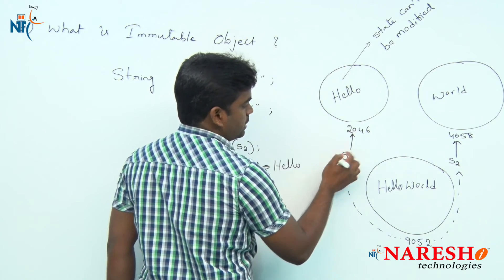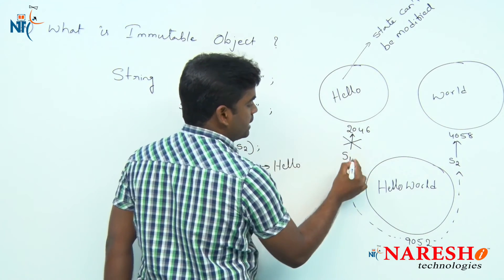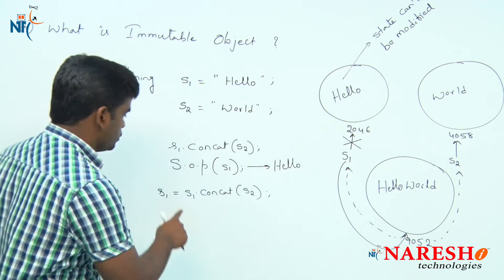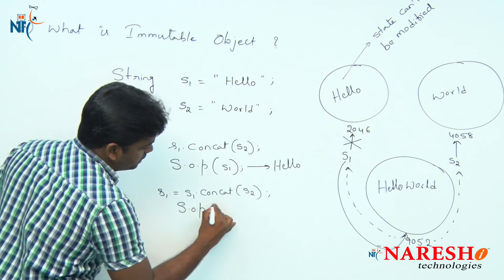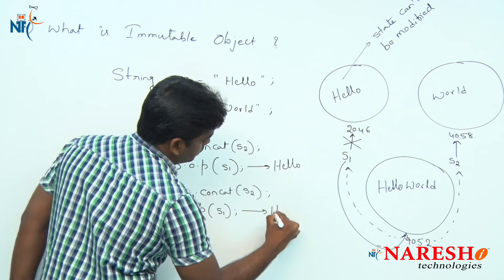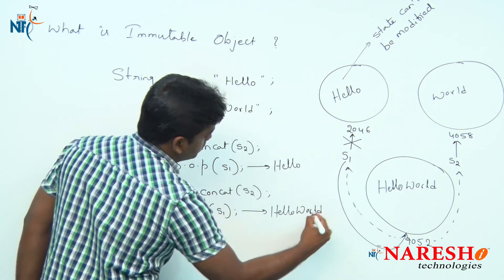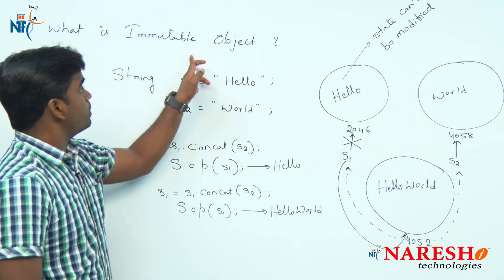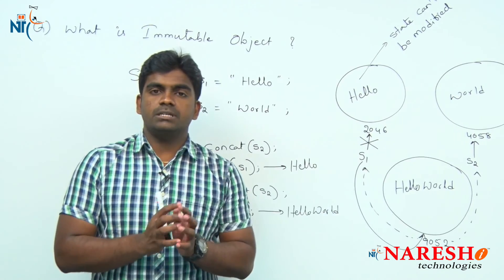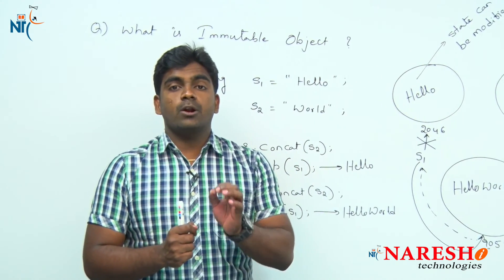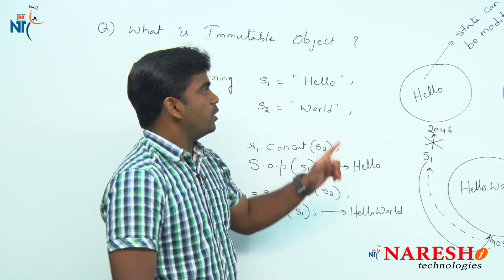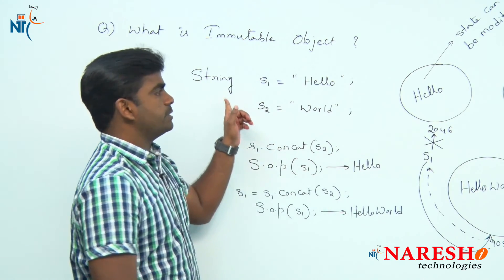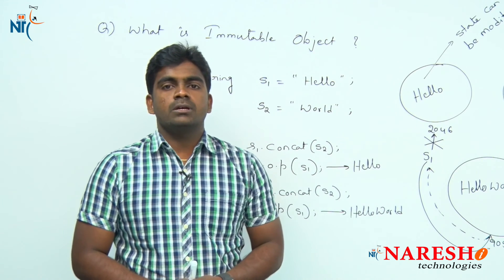Suppose after writing s1.concat(s2), if you collect the result into s1, then s1 stops pointing to the original object and starts pointing to the newly created object at location 9052. So when you print s1 now, it prints 'hello world'. That is what immutable object means — once the object has been created, the state cannot be modified. One best example is the String class.